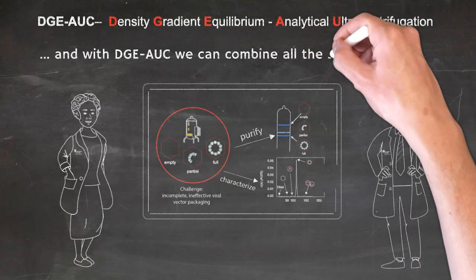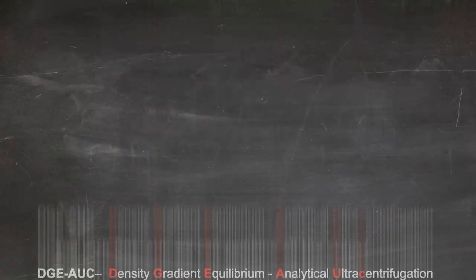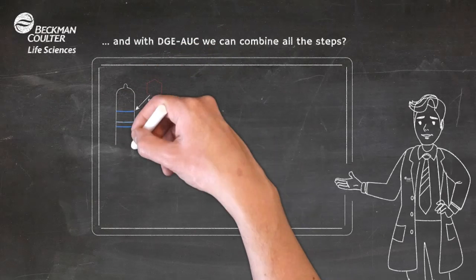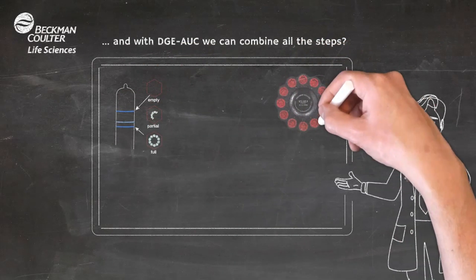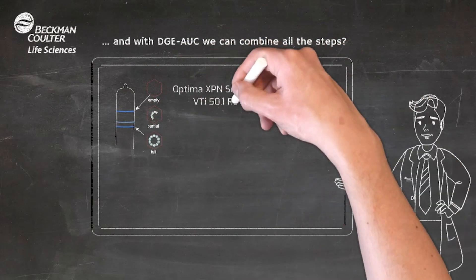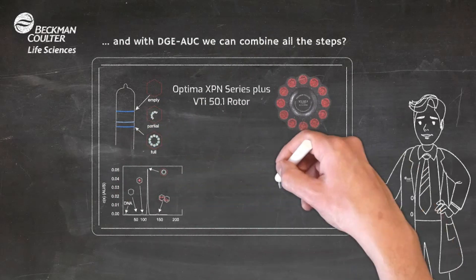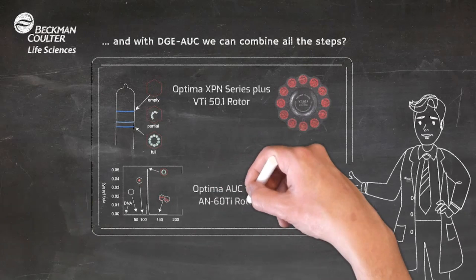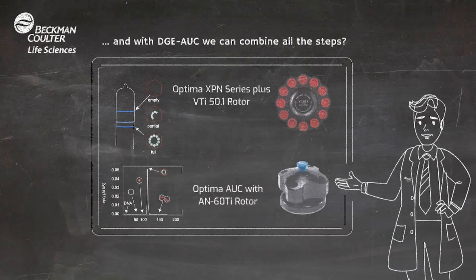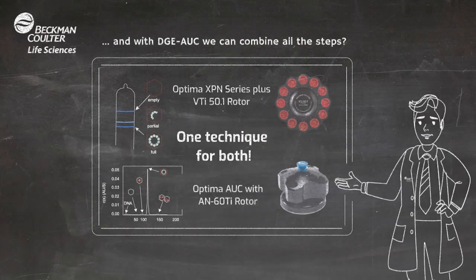And with DGEAUC, we can combine all of these steps? Yes, you can use the DGUC technique for viral vector purification in your ultracentrifuge, and then you can use that same technique to characterize your sample in the analytical ultracentrifuge, or AUC. One technique for both steps.